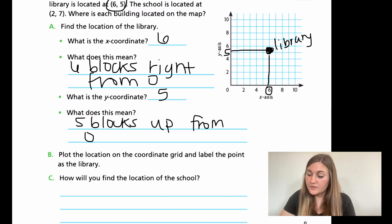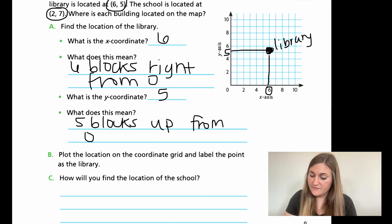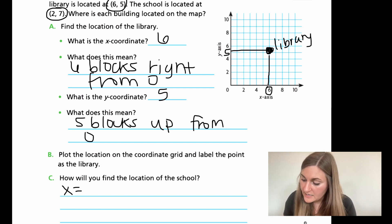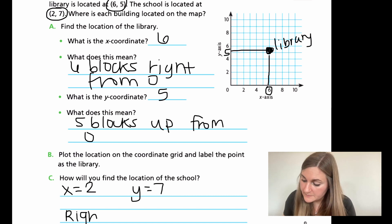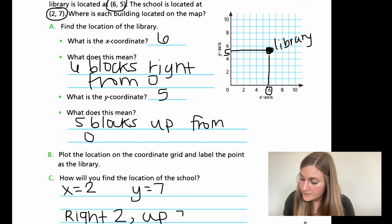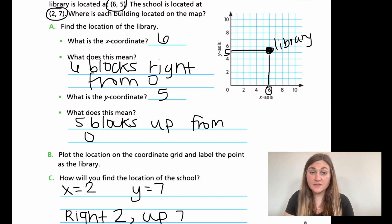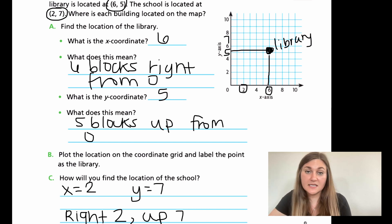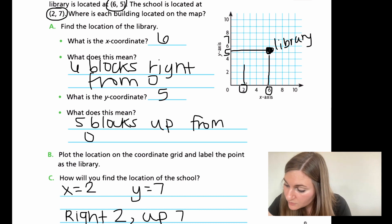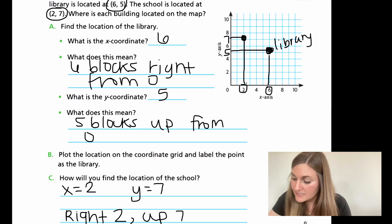Now the next part in C says how will you find the location of the school? The school is at two, seven — so my x-coordinate is at two and my y-coordinate is at seven. I'm going to go to the right two, and then go up seven, and plot that location on the coordinate grid and label it as the school. If I go over to the two and then up to the seven — in between that six and the eight — up this two line to where it meets at seven, this intersection is now the school.